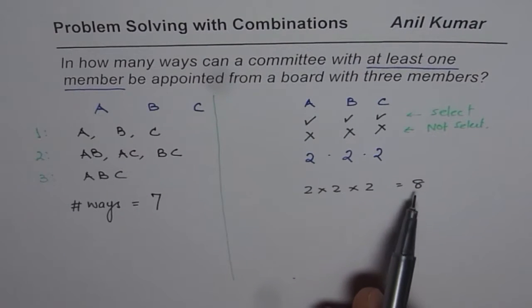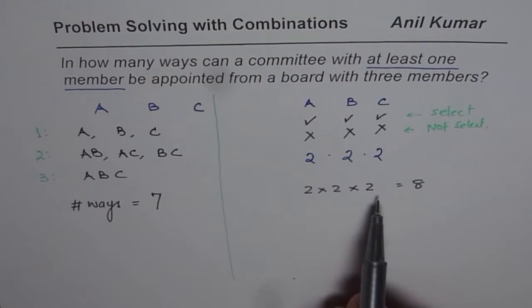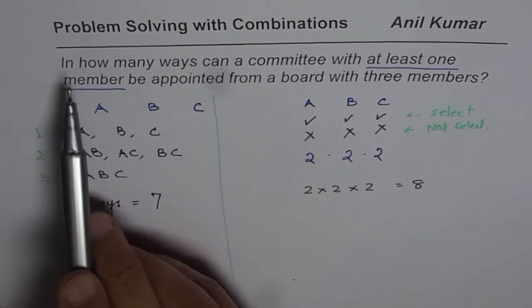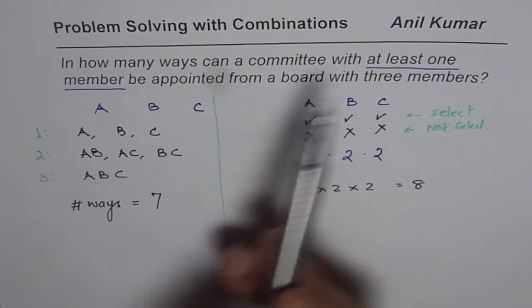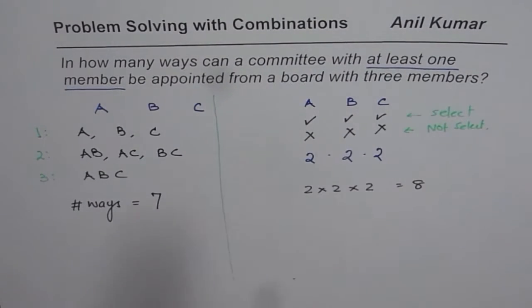Clearly, this is not the correct answer. The correct answer is seven. We just did it. Now, what is the correction you need to look for? Let's read the question once again. It says, in how many ways can a committee with at least one member be appointed from a board with three members?